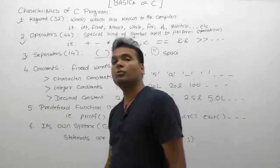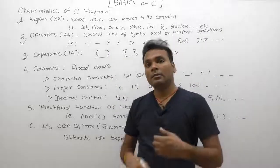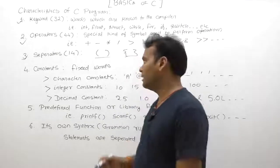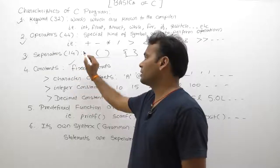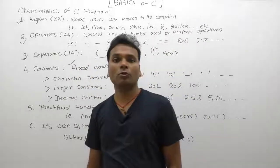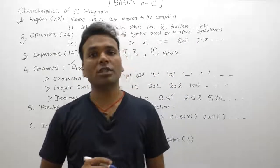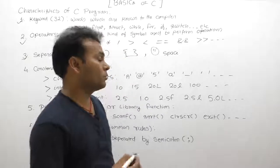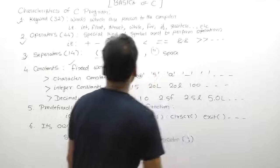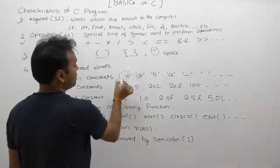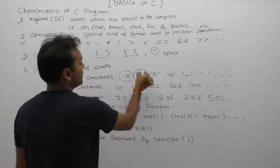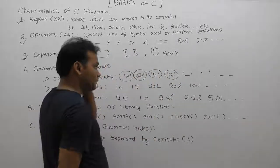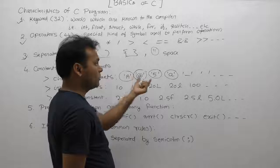Next one: constants. Constants are values which are predefined to the compiler, fixed values. There are three types of constants available: character constants, integer constants, and decimal number constants.